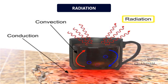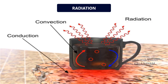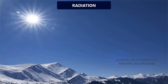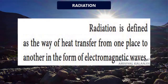Now, we shall see about radiation. Radiation is the third form of heat transfer. By conduction, heat is transferred through solids. By convection, heat is transferred through liquids and gases. But by radiation, heat can be transferred through empty space — even through vacuum. Heat energy from the sun reaches the earth by this form of heat transfer. Radiation is defined as the way of heat transfer from one place to another in the form of electromagnetic waves.